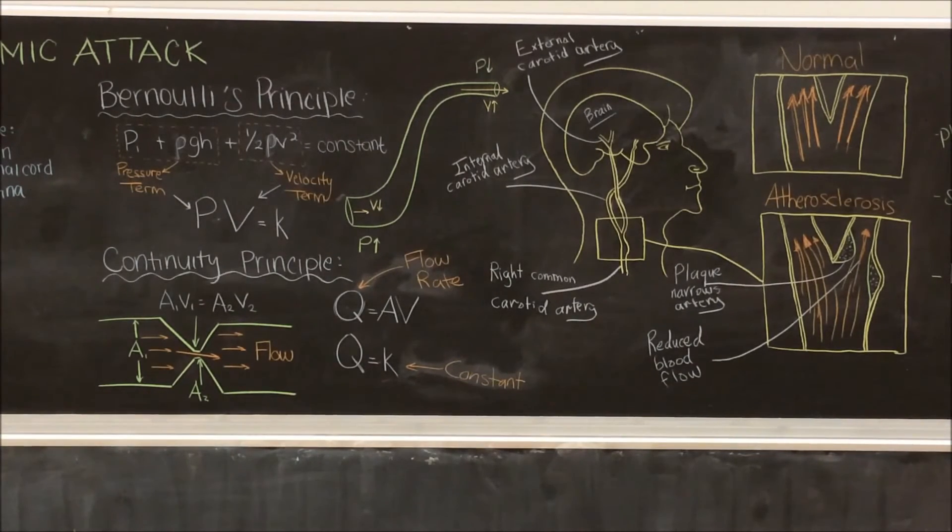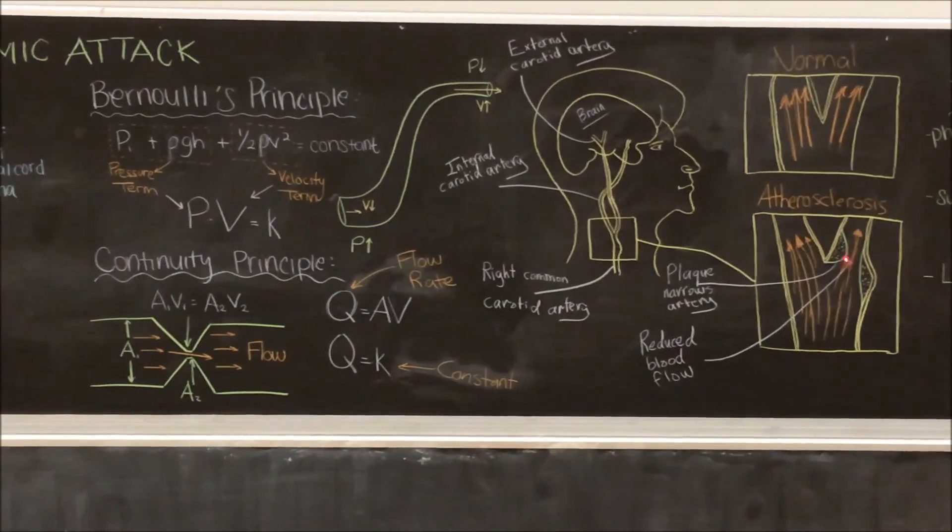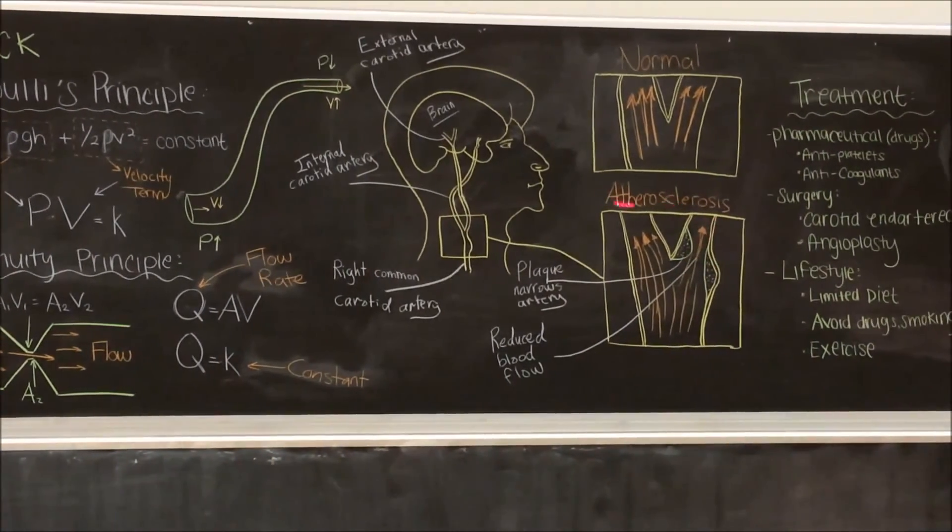Moving on to the mechanism, as mentioned previously, TIAs are mini strokes which result in transient buildup of plaque of the blood vessels known as atherosclerosis.